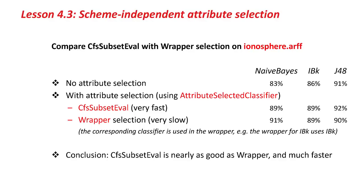J48 was already extremely good without any Attribute Selection, and I got 92% for the very fast method, and in fact, I got slightly worse results than 90% for the much slower wrapper selection. It's a little bit surprising that wrapper selection does worse than CFSSubsetEval for J48. These are just based on one run, of course. The conclusion is that CFSSubsetEval is nearly as good as the wrapper method, and much faster.